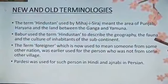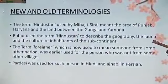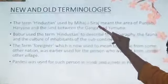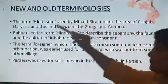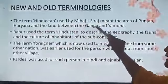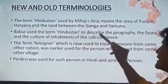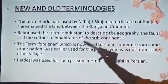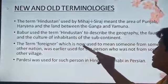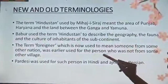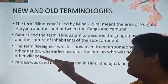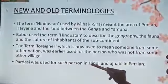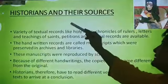Children, here we will read how the old and new terminologies emerged during this period. The word Hindustan, which we use today for a country, was used by Minhaj-i-Siraj, the 13th century chronicler, to show the area of Punjab, Haryana and the land between the Ganga and Yamuna. Babur used the term Hindustan to describe the geography, fauna and the culture of the inhabitants of the subcontinent. The term 'Faridhar' was used for a person who was not from the particular community or village, whereas today it is used for someone who is not from our nation.